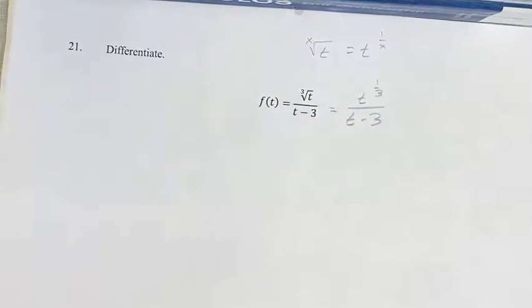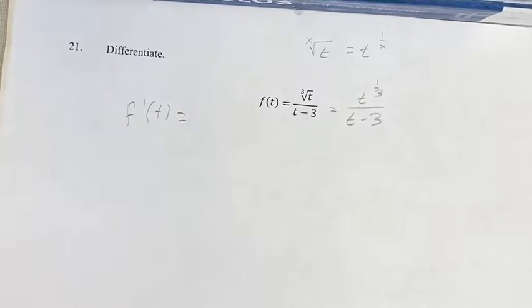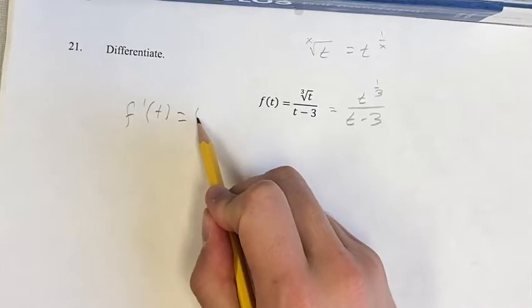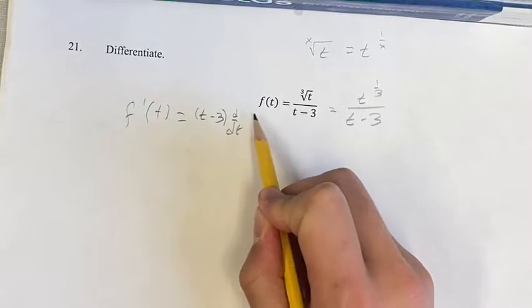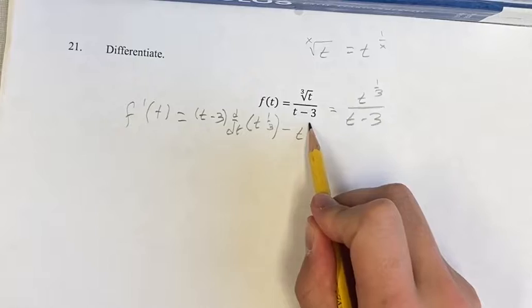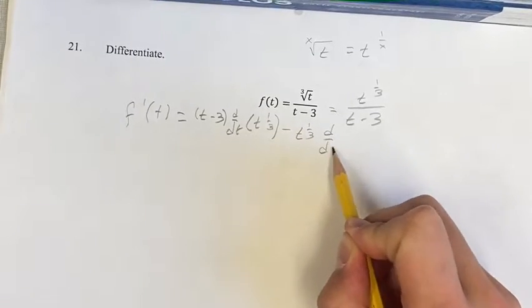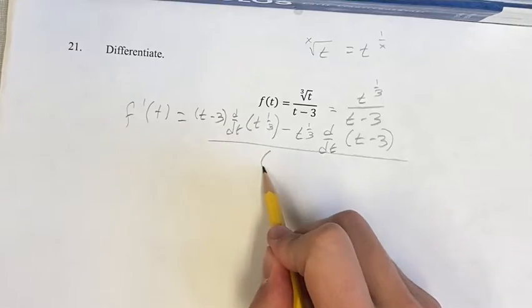Now this is something that we can more easily take the derivative of using the quotient rule. So our derivative is going to be equal to the denominator times the derivative of the numerator minus the numerator times the derivative of the denominator, all over the denominator squared.